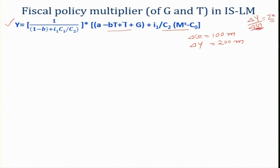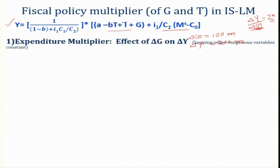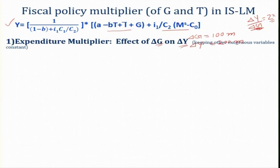In the IS-LM framework, let us see what factors determine the value of the government expenditure multiplier. The expenditure multiplier tells us the quantitative effect of government expenditure on del-Y, keeping other exogenous variables constant. If you take the first derivative of Y with respect to government expenditure, you get this value — and this is the fiscal policy or government expenditure multiplier.